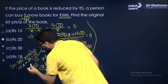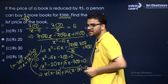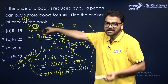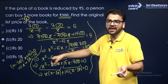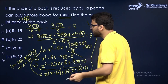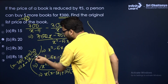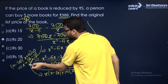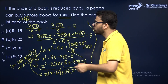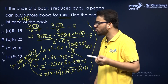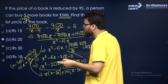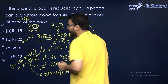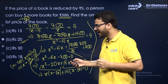Are both values valid? No — it's a list price, so it can never be negative. Neglect the negative value. Therefore the original cost of each book is rupees 20. I hope that's clear.